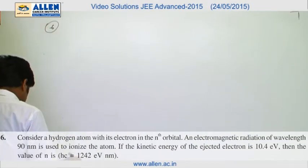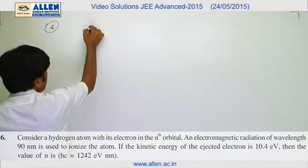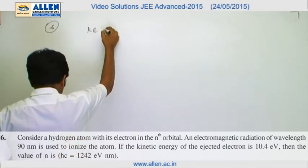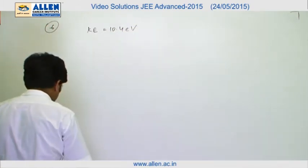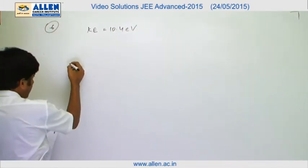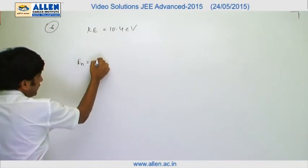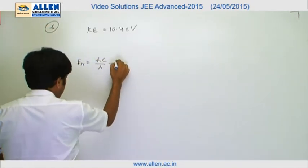In question number 6, kinetic energy of the electron is given, that is 10.4 electron volts. Therefore, its ionization energy in nth orbit will be given by En = hc/λ - 10.4.